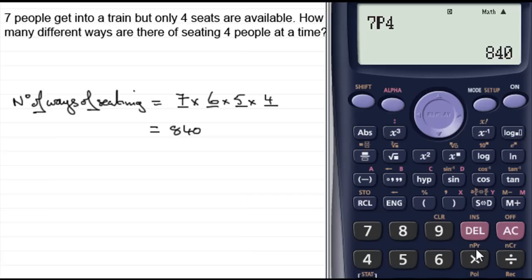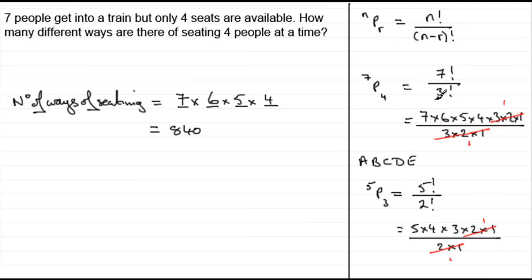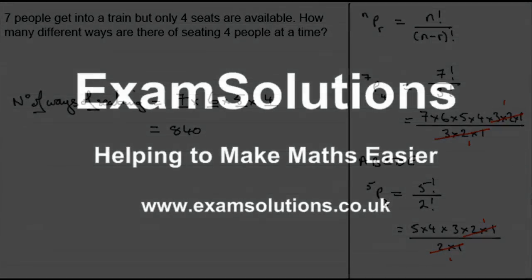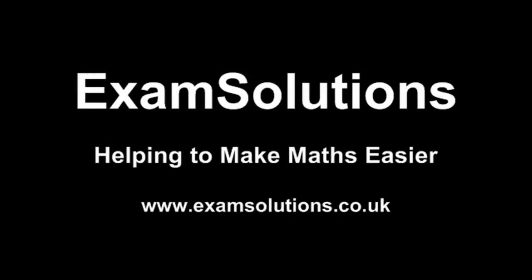Okay, well I hope that's given you some idea then of how to do this kind of permutation, where you've got to permutate R things from N, and that you can use this particular formula as a shortcut. Okay, well thanks for listening, and I hope that's been of some use to you.